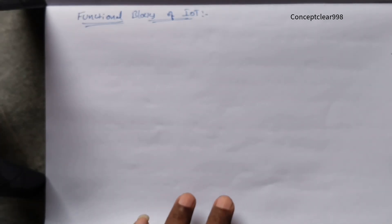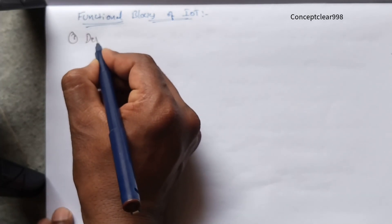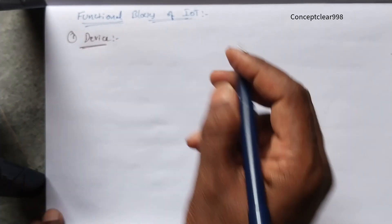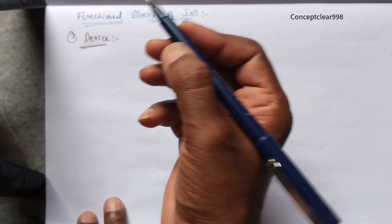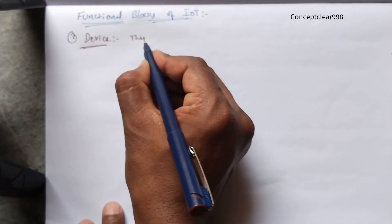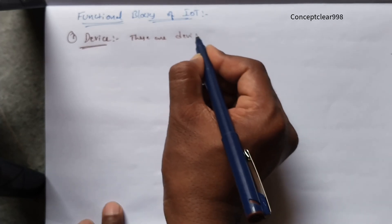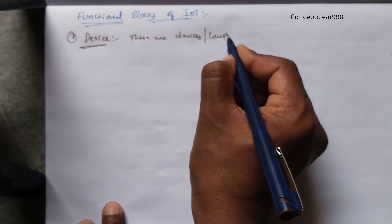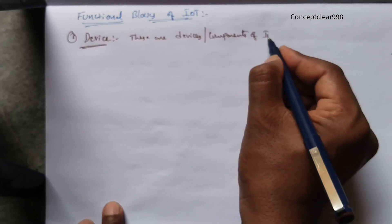The first block is Device. Device refers to the things or components of an IoT system. These are the components of the IoT system that provide sensing and actuation capabilities.